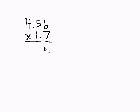In order to multiply decimal numbers, you first just multiply the numbers just like you would any other numbers, ignoring the decimals.